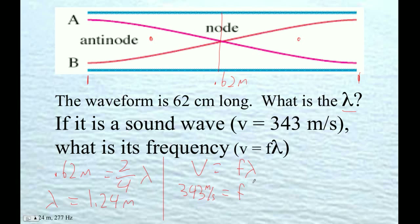And then we want to find frequency. The wavelength is 1.24. Okay, so 343 divided by 1.24 is 276.6.